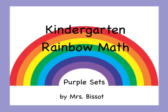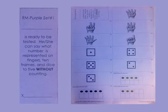These are the Kindergarten Rainbow Math Purple Sets. For Purple Set 1, you must quickly say what number is being represented with the fingers, the dice, and the 10 frames without counting.